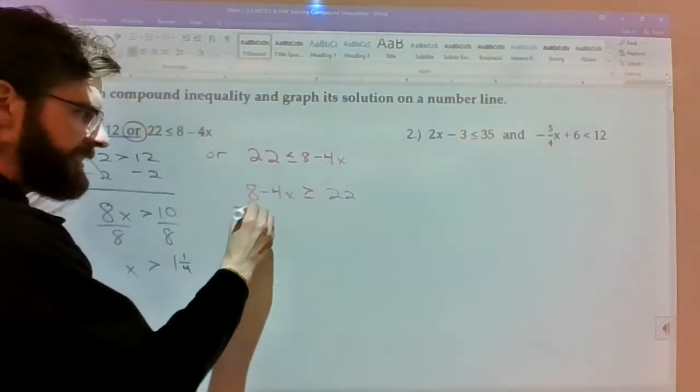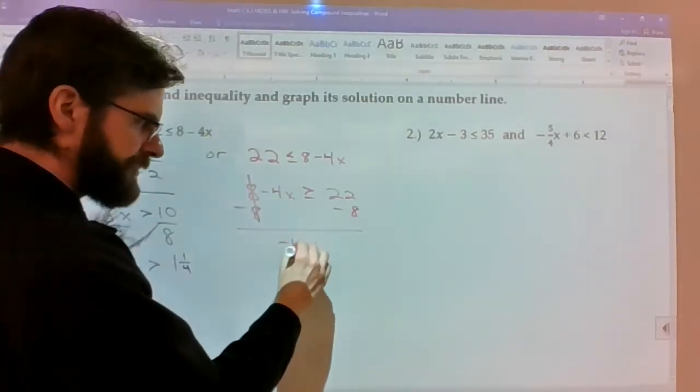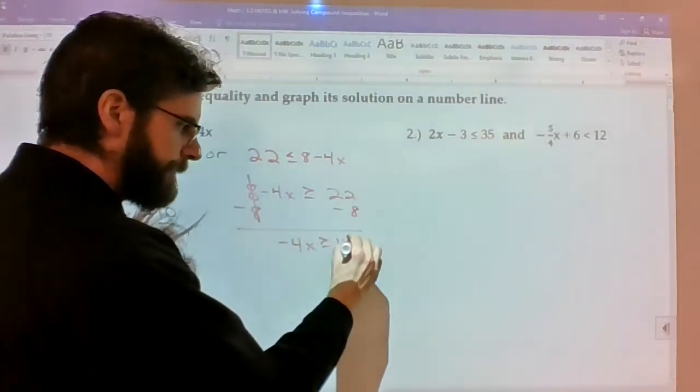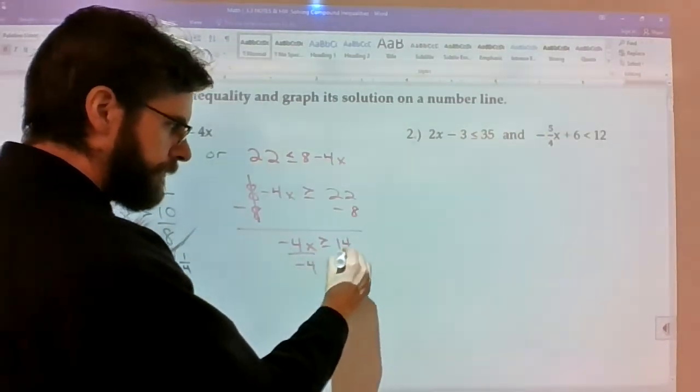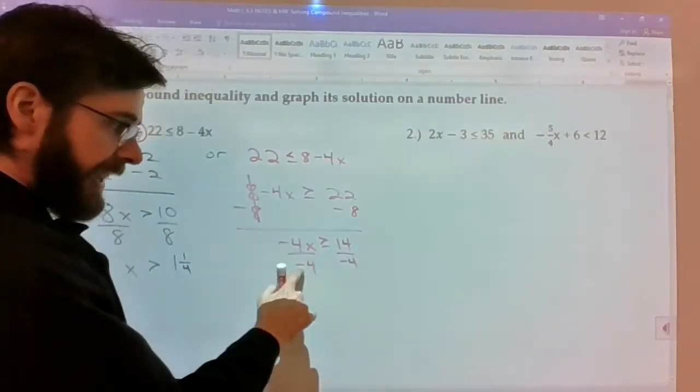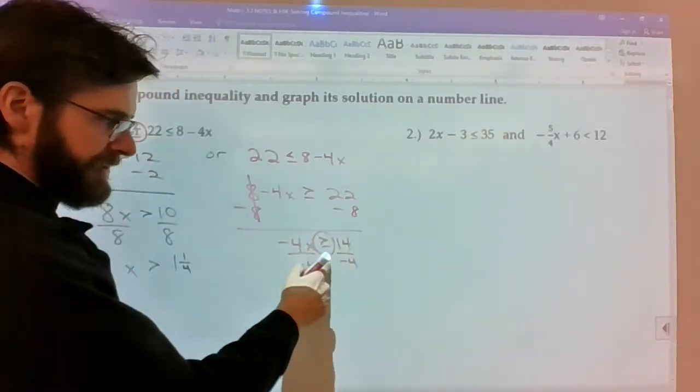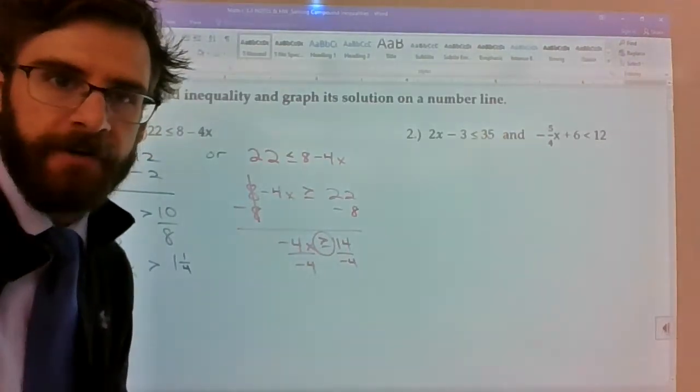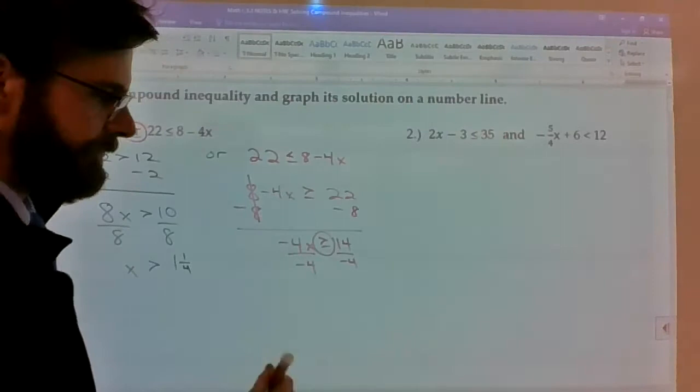So now subtract 8 from both sides. You get negative 4x is greater than or equal to 14. Divide both sides by negative 4. Dividing by a negative, if you recall from the last two sections, means we have to flip this. So it's the same in compound inequalities. All the rules that were there for regular are going to be the same for compound.